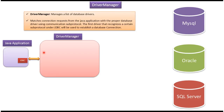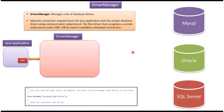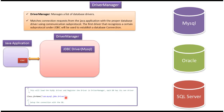That is the first step. Suppose from a Java application I want to connect to a MySQL database. Then what I have to do is first load the MySQL-specific JDBC driver in the Driver Manager. Using Class.forName, here you have to specify the MySQL-specific JDBC driver. This Class.forName method will load the MySQL driver and register the MySQL driver in the Driver Manager.